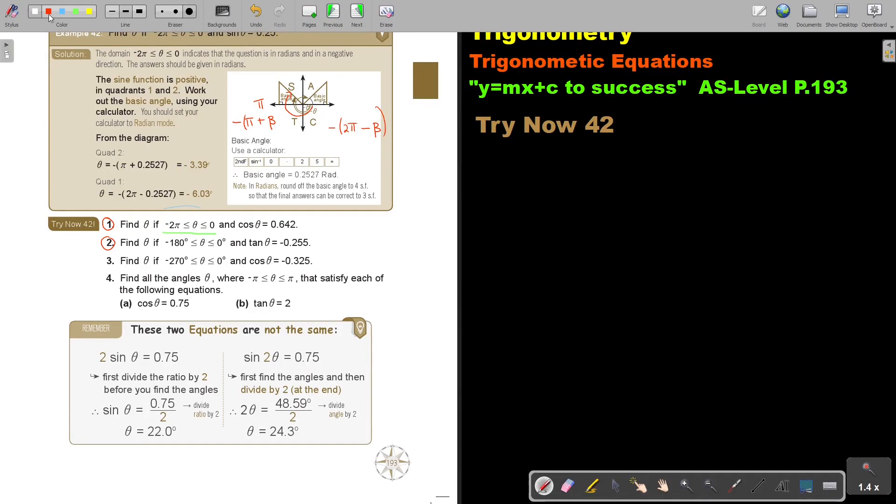Let's look at number two. Find theta if negative 180 is less than or equal to theta, and theta is less than or equal to 0. Stop. Take your calculator and put it on degree mode. So, my calculator, mode mode 1. There's a small d. And then you move on. Otherwise, you're going to forget and your values is going to be incorrect. There's a part blocked out. I'll show you now. And tan theta is negative 0.255. Let's start.